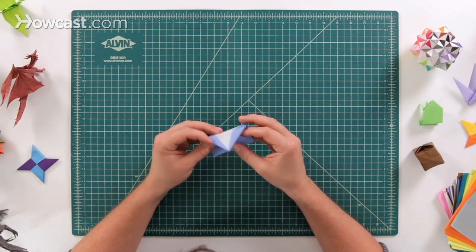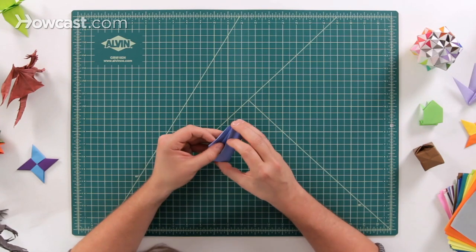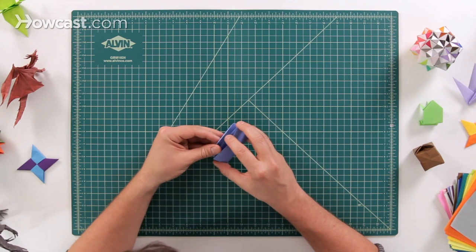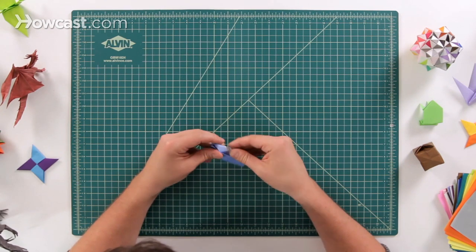And what that's going to do, once that flap is down there, we're going to open up these two flaps right here and tuck that triangle inside those two flaps of paper.